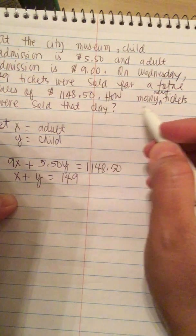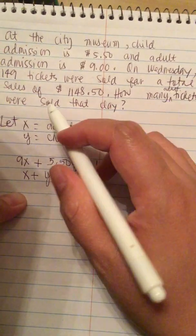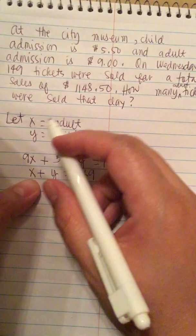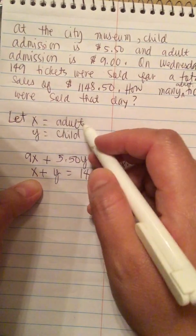We want to know how many adult tickets were sold that day, so we're going to solve for X because we let X equal the adult ticket.